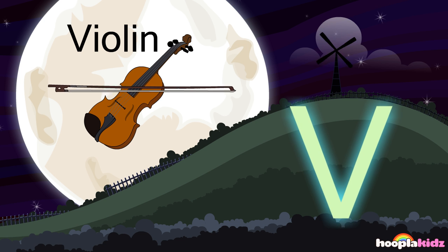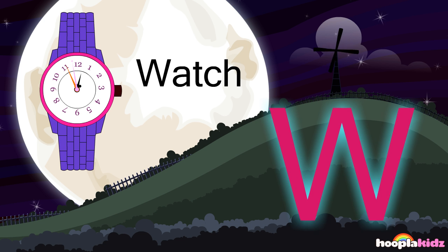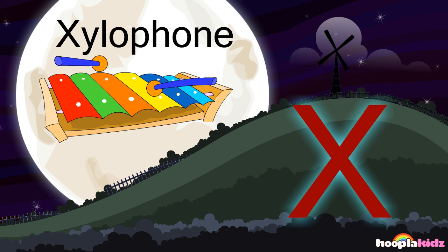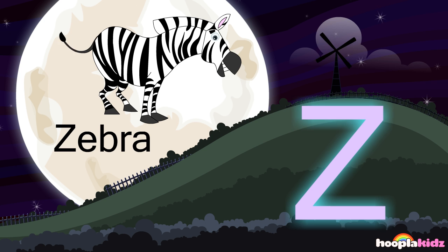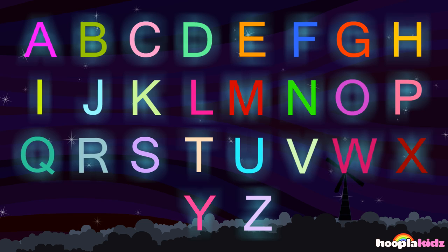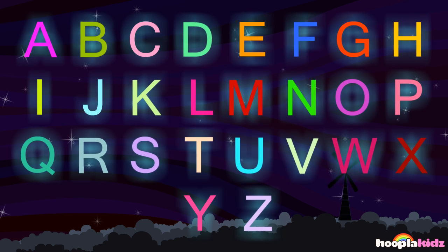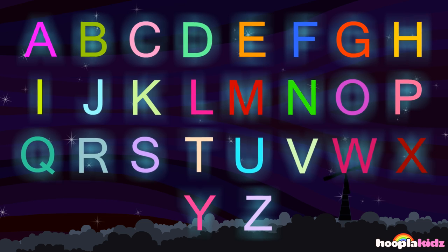V for violin, W for watch, X for xylophone, Y for yellow, Z for zebra. This is the alphabet song, now it's your turn to sing along.